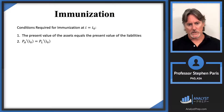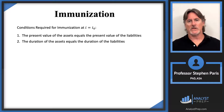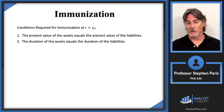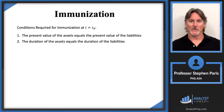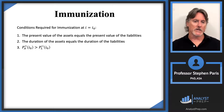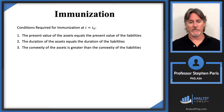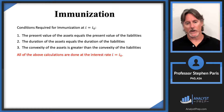The second condition is the mathematical derivative condition, which combined with condition one, tells us that the duration of the assets must equal the duration of the liabilities. It doesn't matter which duration you use — Macaulay or modified — just be consistent; don't mix one for assets and the other for liabilities. The third condition is the second-derivative condition, which combined with condition one, implies that the convexity of the assets is greater than the convexity of the liabilities. All of these calculations are done at the interest rate I equal I-naught.